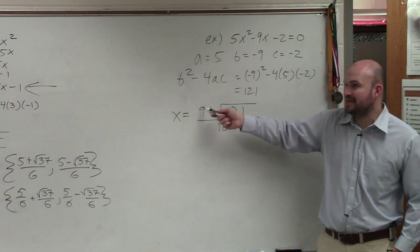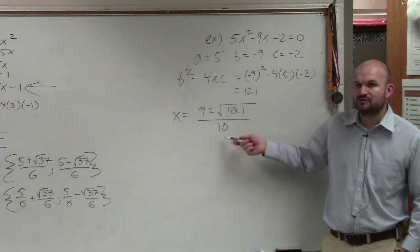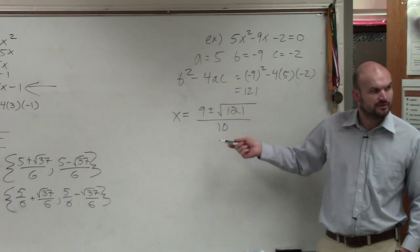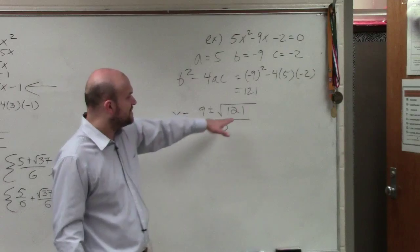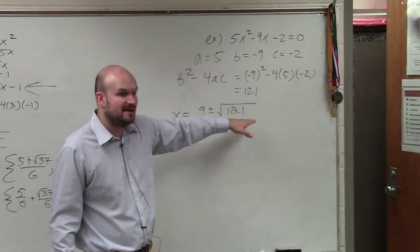All I did was plug in b, opposite of b, and plug in 2 times a. OK? So now, since we have a square number, can we take the square root of that number?